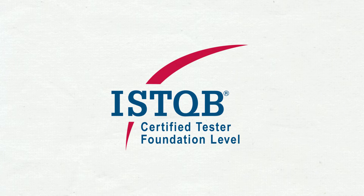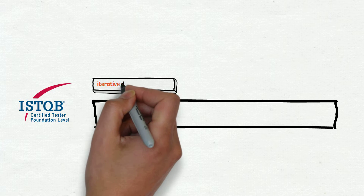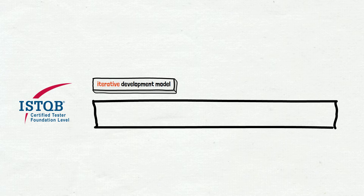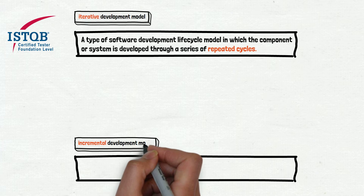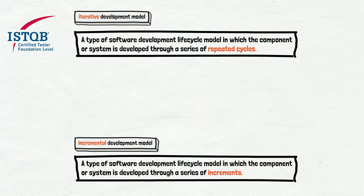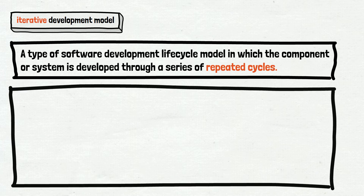We begin with an explanation given by ISTQB. The link to the ISTQB website will be provided in the materials for the video. According to ISTQB, the iterative development model is a type of software development lifecycle model in which the component or system is developed through a series of repeated cycles. The incremental development model definition is almost identical — the difference is only in one word. The definitions are very abstract and unclear, so let's take a closer look at the information provided by ISTQB.